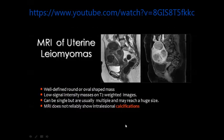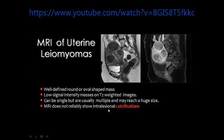By MRI the uterine fibroid has a classic appearance: a well-defined mass either within the uterine cavity, within the myometrium, or outside the uterine cavity. This mass will appear of low signal on T1, low signal on T2, and may show some contrast enhancement after gadolinium injection. MRI is relatively insensitive for detection of calcium within uterine fibroids. The classic appearance is well-defined masses within the myometrium or inside the uterine cavity: submucous fibroid, interstitial fibroid, and subserosal fibroid. This is the sagittal T1 post-contrast with fat suppression.